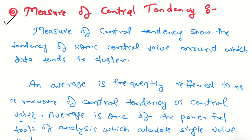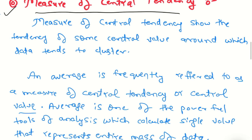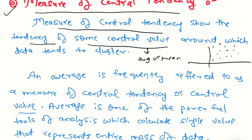Now the main topic: Measure of central tendency. Measure of central tendency shows the tendency of some central value around which the data tends to cluster. So how does the cluster form? Is it spread or clustered together?